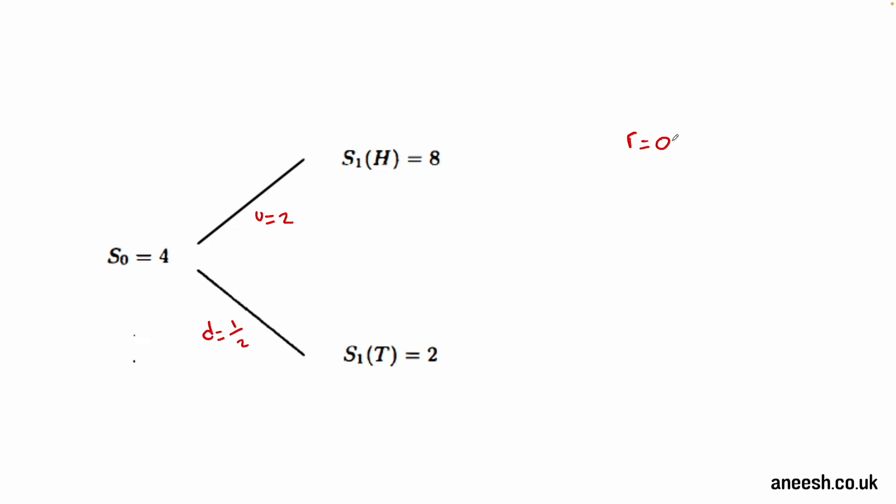We're also told that the interest rate is 0.25 and in our call option we're given a strike price of 5, meaning there would be a profit of 3 if the coin results in heads, as the owner of the call can buy our stock at 5 and then sell it in the market at 8.